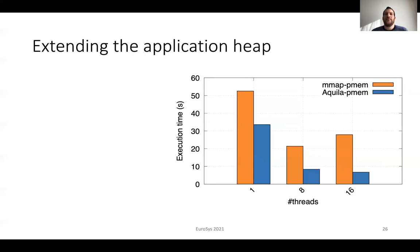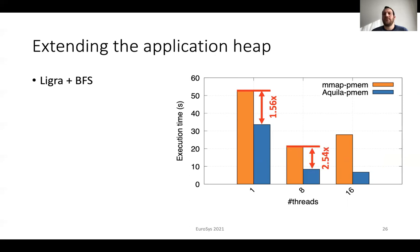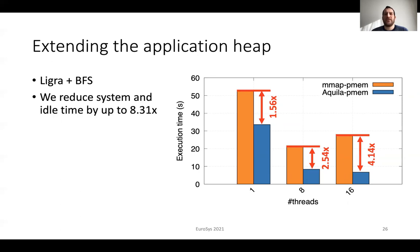Finally, we provide an evaluation for extending the application heap over fast storage devices. We use Ligra and the BFS algorithm. This figure shows the comparison for Linux mmap and Akila. The x-axis shows the number of threads, and the y-axis shows the execution time in seconds. The orange bars show Linux mmap, and the blue bars are for Akila. With a single thread, Akila reduces the execution time by 1.56 times; with 8 threads, 2.54 times; and with 16 threads, 4.14 times compared to Linux mmap. These benefits come from a large reduction in system and idle time by up to 8.3 times.